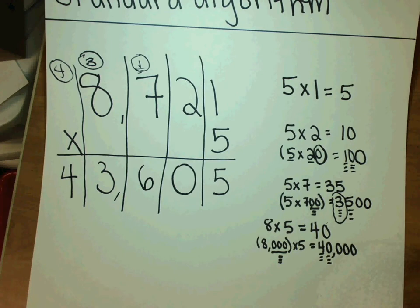I hope that helps clarify multiplying four-digit by one-digit numbers using the standard algorithm. Thank you.